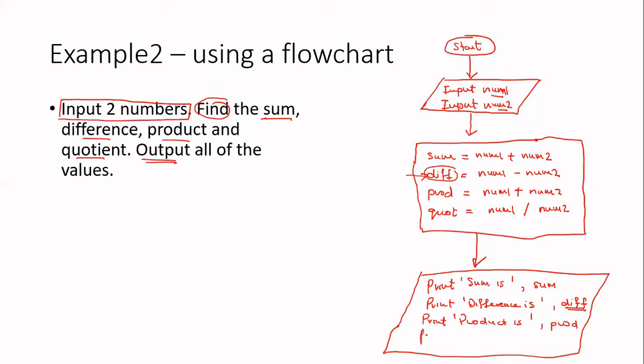So print product is. That's for the user. And the placeholder is prod. And finally print quotient is. And the placeholder is called QUOT. And I'm running out of space. So I will just move in this direction. And I will then bring in my stop, which ends the flowchart. I could say stop or for that matter, even if I did say end, I guess that's not a major problem. So I've completed the flowchart.